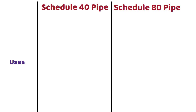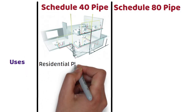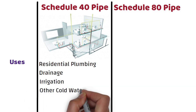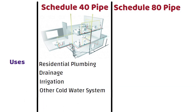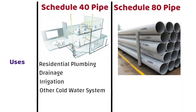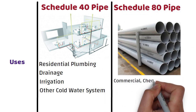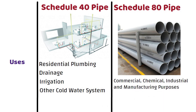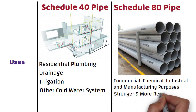Schedule 40 pipe is best suited for residential plumbing, drainage, irrigation, and other cold water systems. Schedule 80 pipe is most often used in heavy duty commercial, chemical, industrial, and manufacturing purposes. Due to the greater wall thickness of schedule 80 pipe, it is collectively understood to be stronger and more resistant than its schedule 40 counterpart.